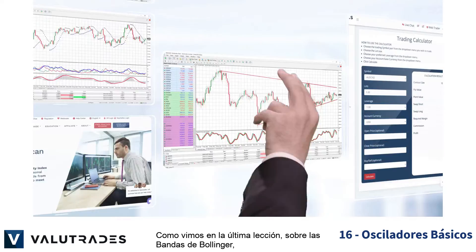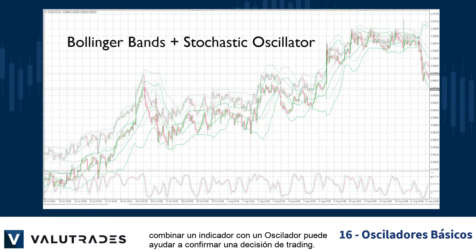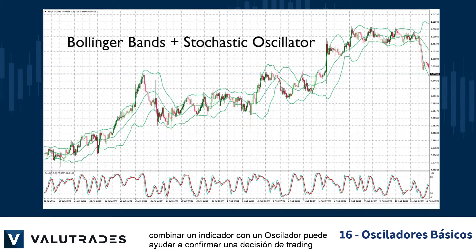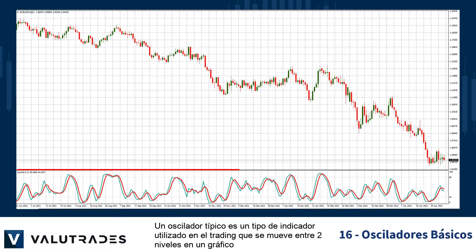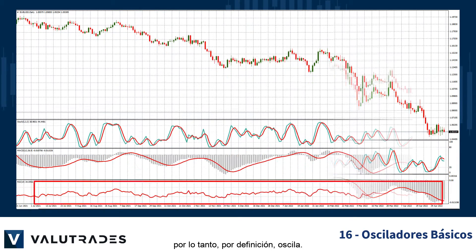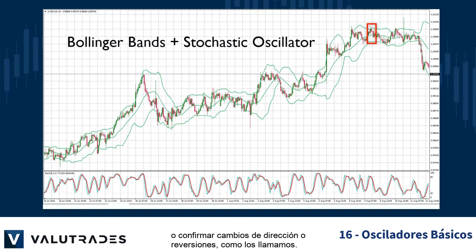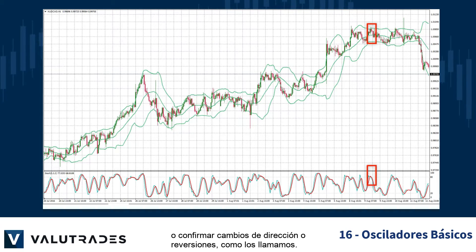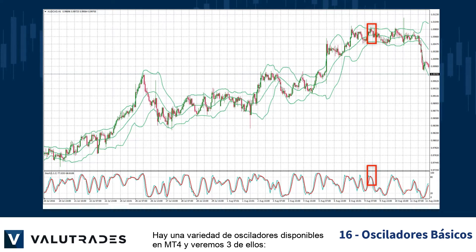As we saw in the last lesson on Bollinger Bands, combining an indicator with an oscillator can help to confirm a trading decision. A typical oscillator is a type of indicator used in trading that moves between two levels on a graph — so therefore, by definition, it oscillates. Oscillators are used by all levels of traders to indicate or confirm changes in direction, or reversals as we call them. There are a variety of oscillators available on MT4, and we will look at three of them.